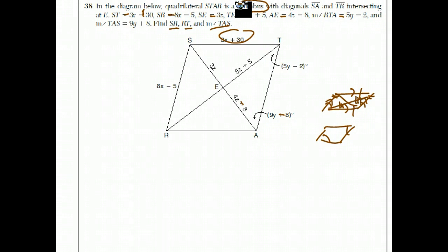One property of a rhombus is that all four sides are equal. So if all four sides are equal, that means 3x plus 30 has to equal 8x minus 5. Add 5 to both sides, subtract 3x from both sides, divide both sides by 5 to get x equals 7. If x equals 7, then 8x minus 5 is 56 minus 5, which is 51. Just to check, 3x plus 30 is 21 plus 30, which is also 51. So I figured out what SR was.